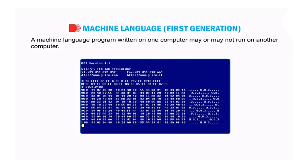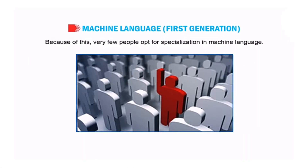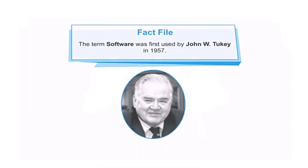When we say machine language is machine dependent, it means a machine language program written on one computer may or may not run on another computer. That's why very few people opt for specialization in machine language. Here's an interesting fact: the term 'software' that we use quite often was first used by John W. Tukey in 1957.